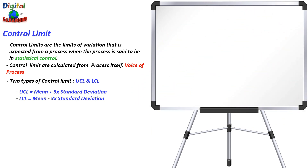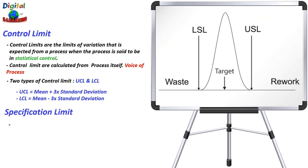Specification limits are basically set by customers and hence they are referred to as the voice of the customer, because they represent the values which the customer requires. They are the limits on product characteristics that define where the product will work and where it will not work. If the product falls outside the specification limits, the item will be rejected.